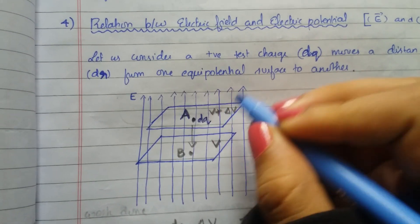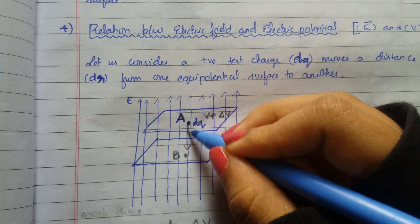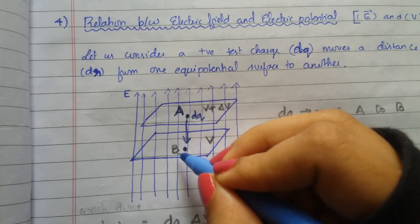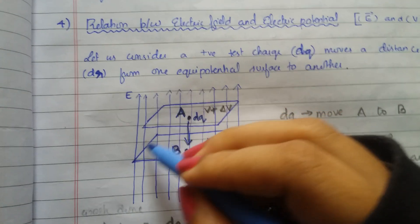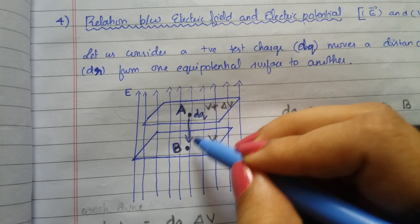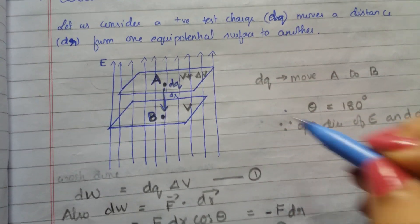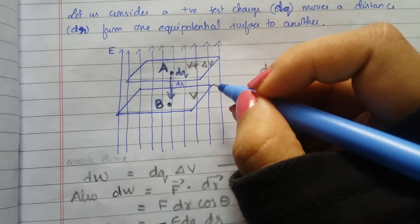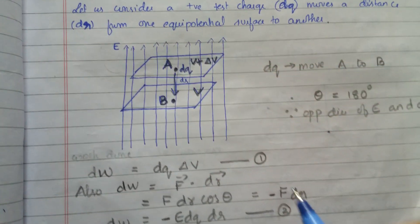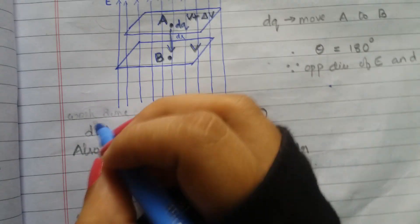The positive test charge dq moves a distance dr — let this be dr — from surface A towards point B on surface B. So dq moves from A to B over a distance dr. The potential at surface B is V plus delta V, and the potential at surface A is V.